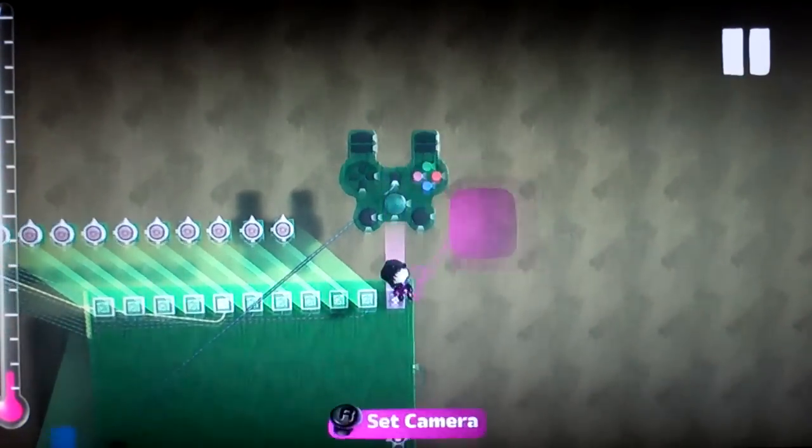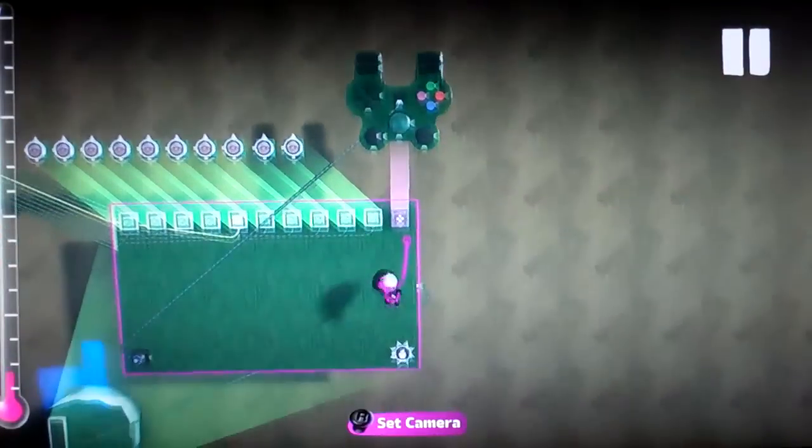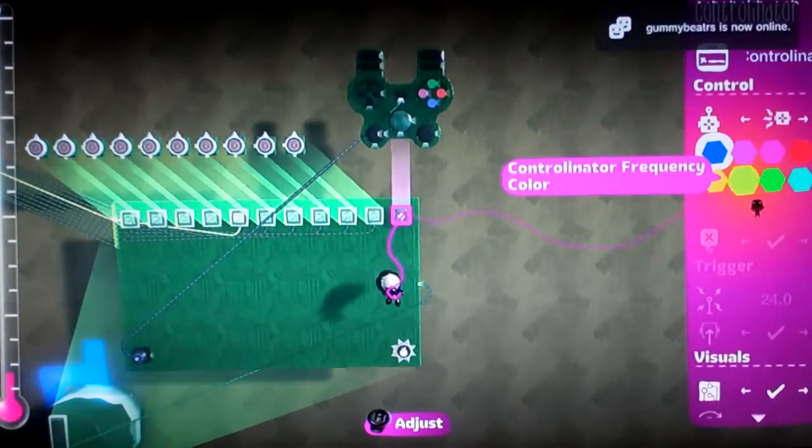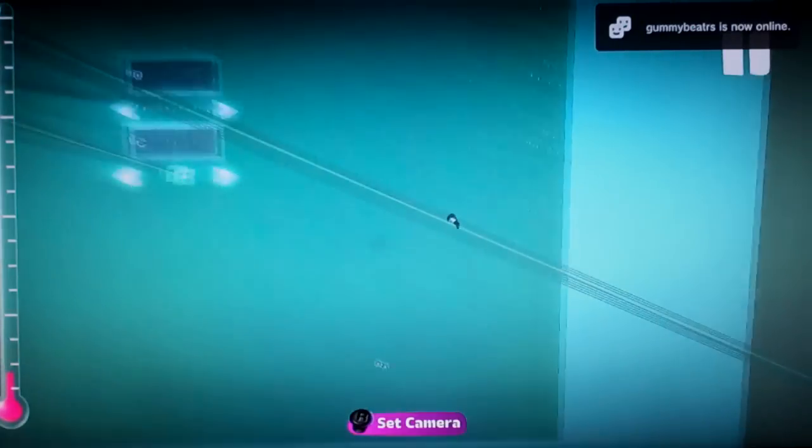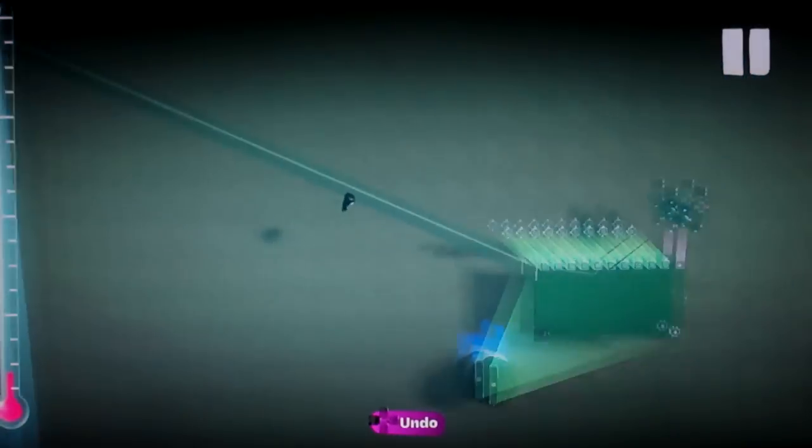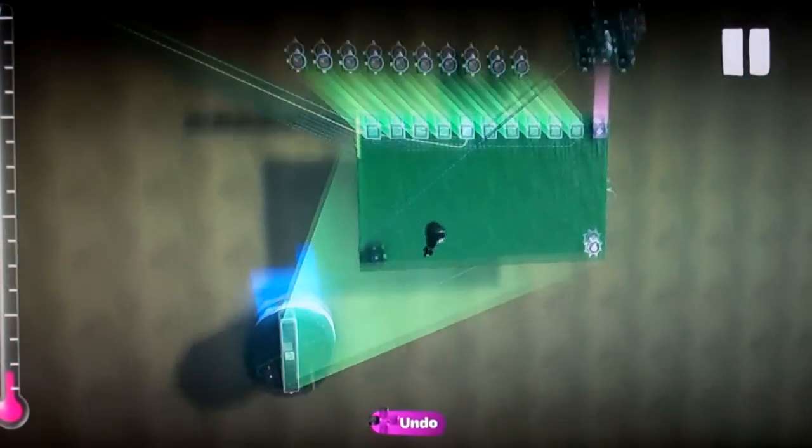You're going to want to place a controlinator here, and you're going to make it so that it's a receiver. I used blue because that's the first color, and then there's your transmitter up here that is blue as well, so as soon as you pop out, you'll be in this transmitter.